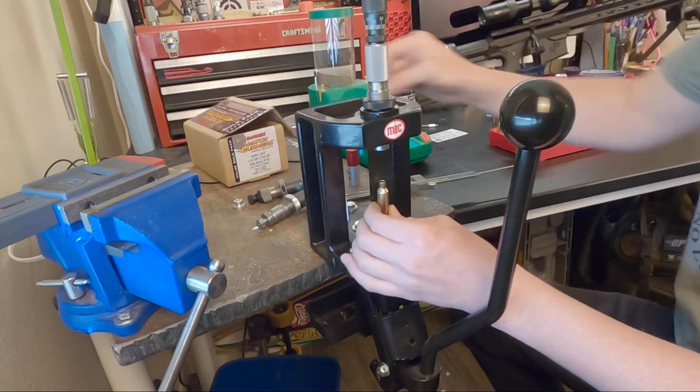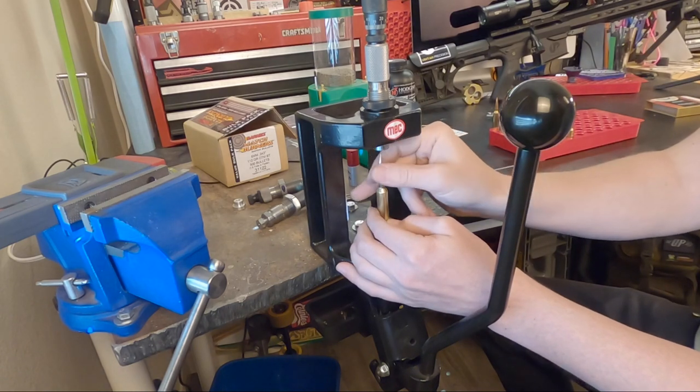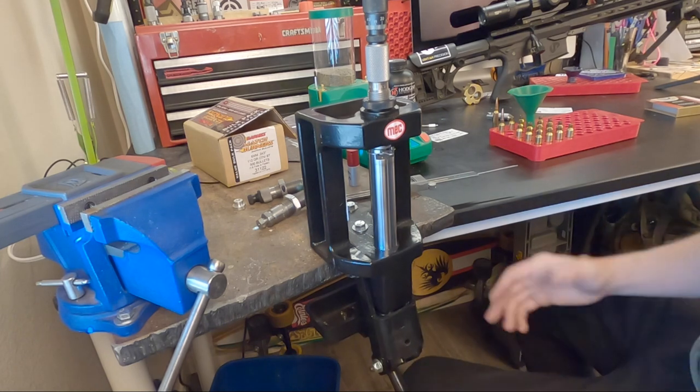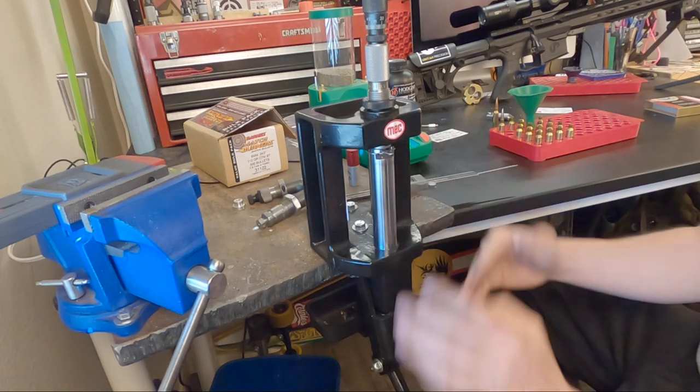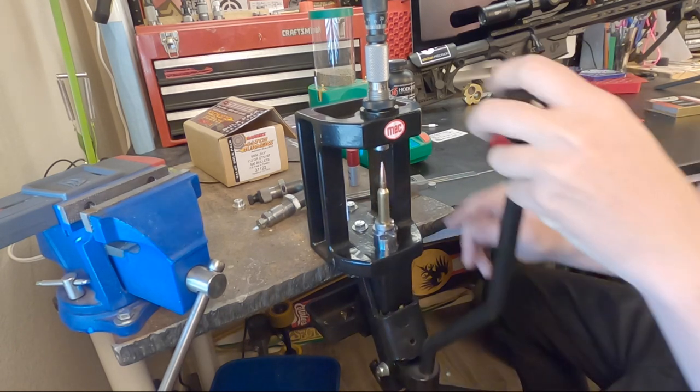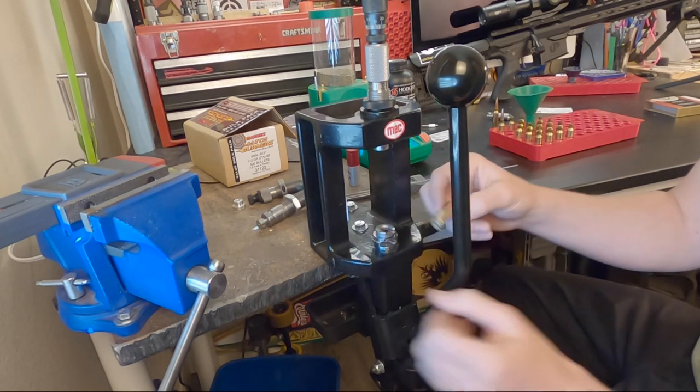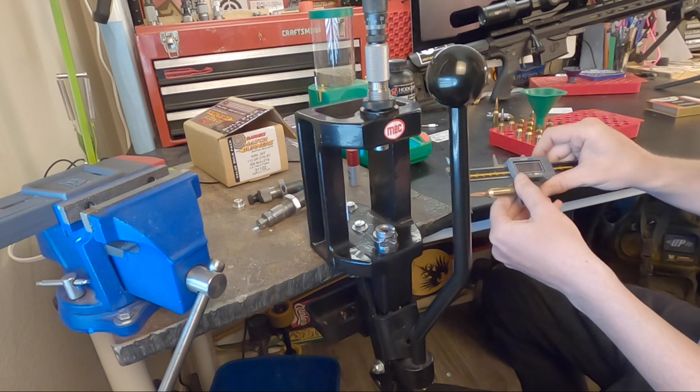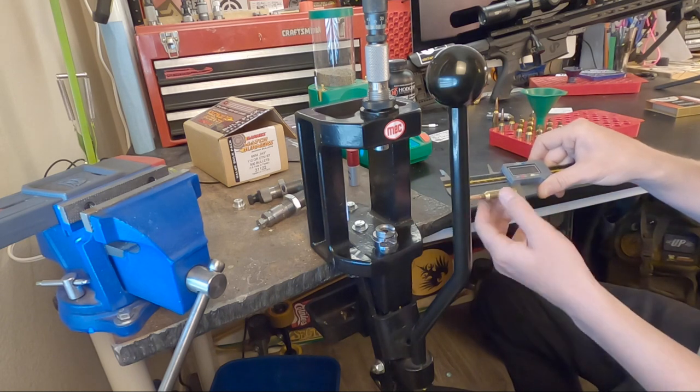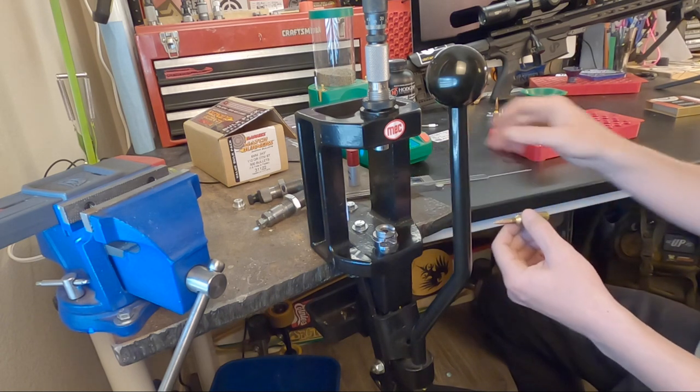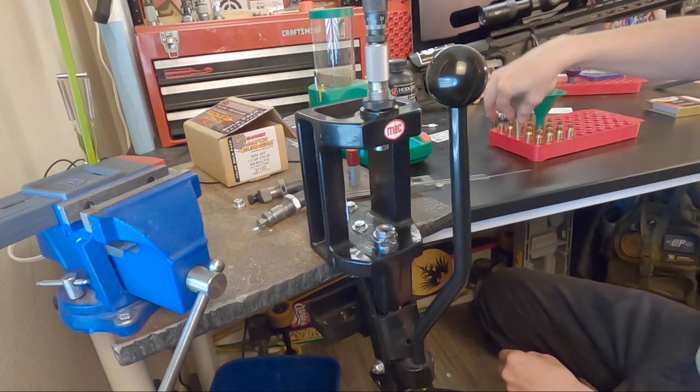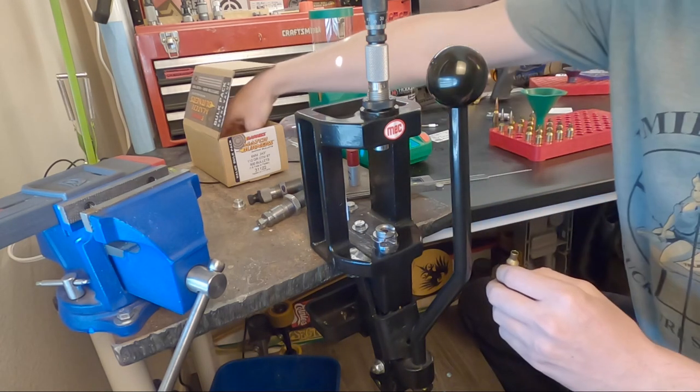And then nice and easy. I usually try and slowly engage it into the seating die. I don't like to just jam it in there because if something's off, I don't want to ruin the brass prep or anything like that. Now let's check our overall length. 2.773. So yeah, I could go in three thousandths if I really wanted to. I know that the max mag length is 2.810. That's not going to be an issue with this length. So we'll go ahead and throw that in there. And this is the length that we're going to go with.